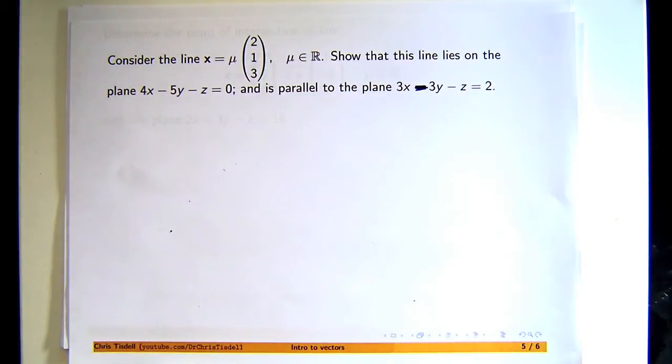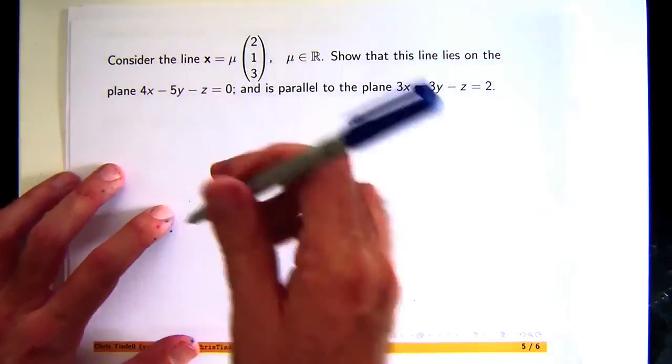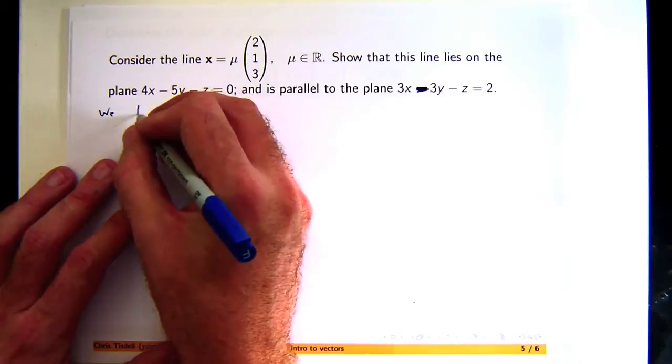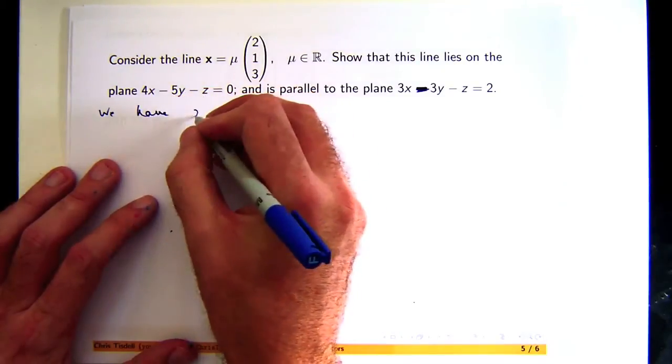Now the first part of this question is pretty straightforward. The second part takes a little bit more thought. So when we talk about this boldface vector, we can just associate a set of points with that vector.